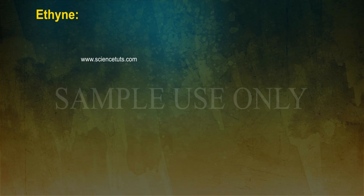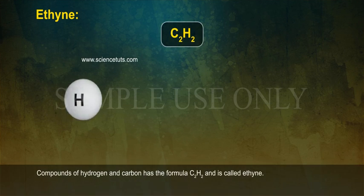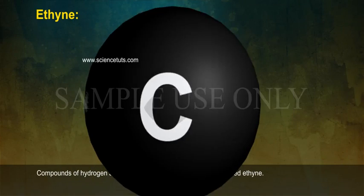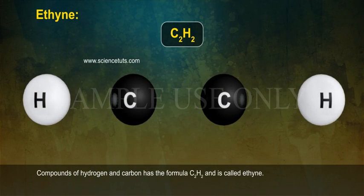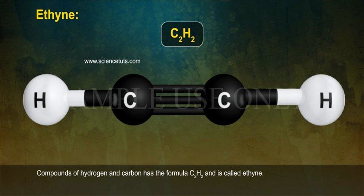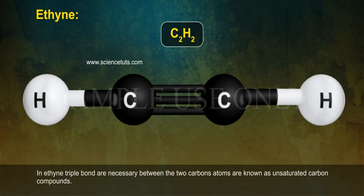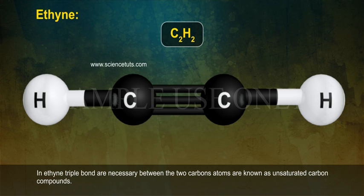Ethyne: compounds of hydrogen and carbon has the formula C2H2 and is called ethyne. In ethyne, a triple bond is necessary between the two carbon atoms. Compounds with double or triple bonds are known as unsaturated carbon compounds.